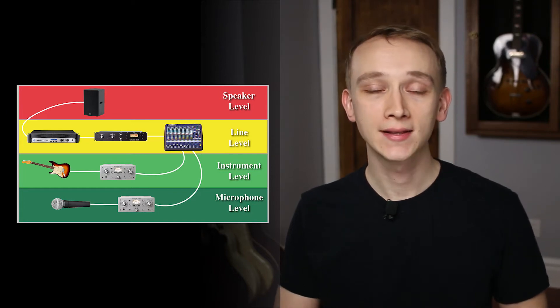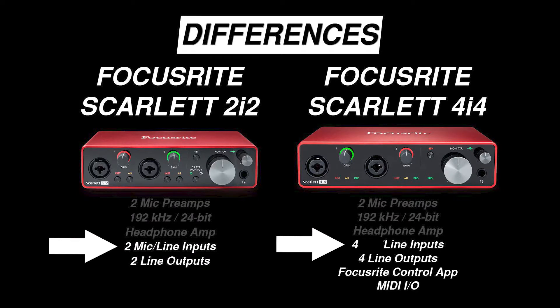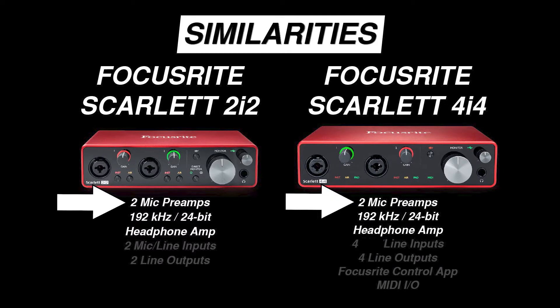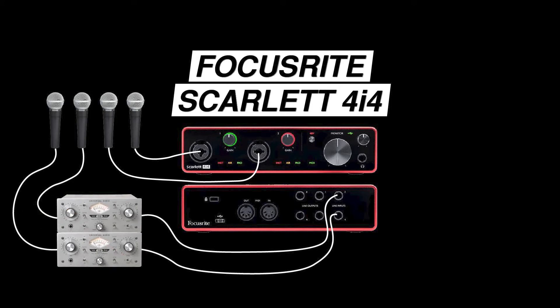It's important to understand the difference between mic level, instrument level, and line level signals when choosing an interface. To illustrate why this is important, let's take a look at the Focusrite Scarlett 2i2 and 4i4. The 2i2 has two inputs and the 4i4 has four inputs. This might be deceiving — both of these interfaces only offer two mic level inputs with microphone preamps. The two extra inputs on the 4i4 are line level inputs, which are for recording keyboards or sequencers, not microphones directly. In order to record microphones with a line level input, you would need an external microphone preamp.